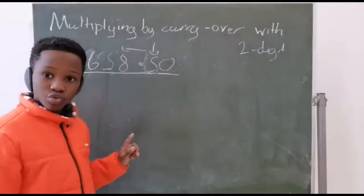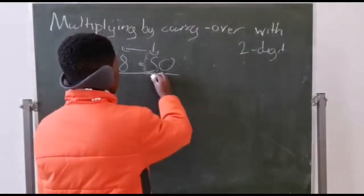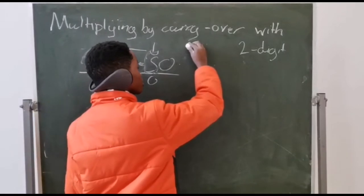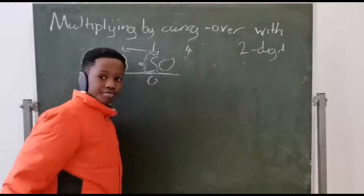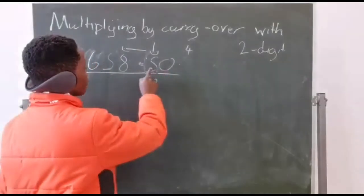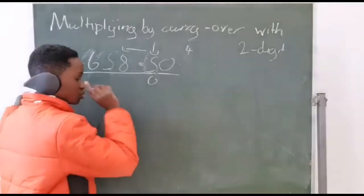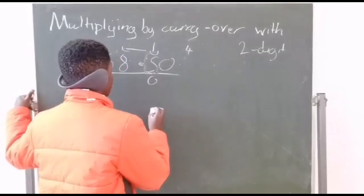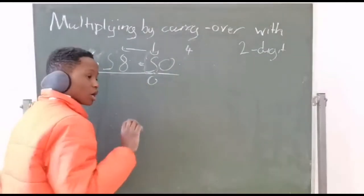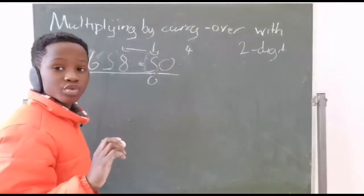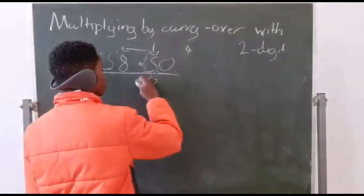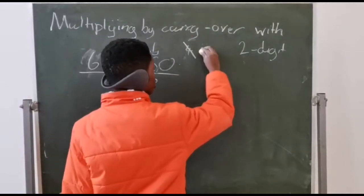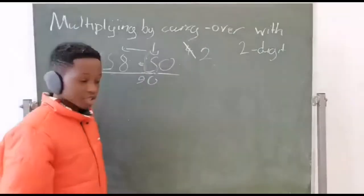5 times 8 is equal to 40. The zero I put here. Now 5 times 5 is equal to 25, plus 4 is equal to 29. The nine I put here.